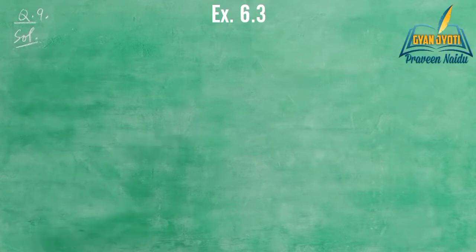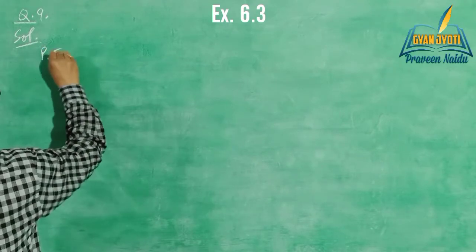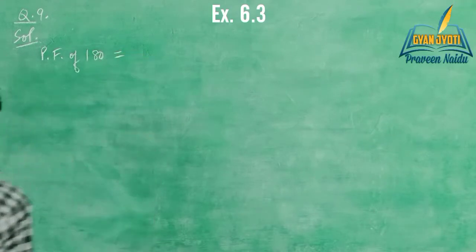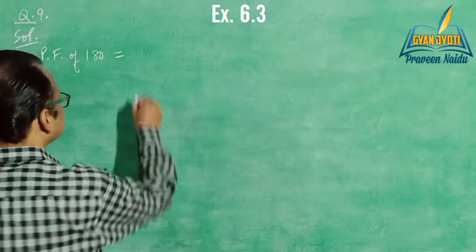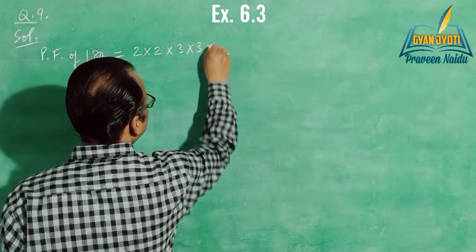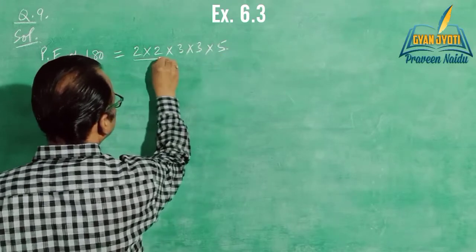Now, we find the prime factors of 180. The prime factors are same as the factors obtained in LCM. That is, 2 into 2 into 3 into 3 into 5.